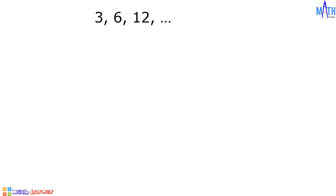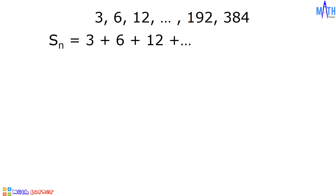Let us consider this example of a geometric sequence: 3, 6, 12, up to 384. Let us find the sum of all the terms of this geometric sequence. We can rewrite this as S sub n equals 3 plus 6 plus 12 all the way to 192 plus 384. The common ratio of this geometric sequence is equal to 2.